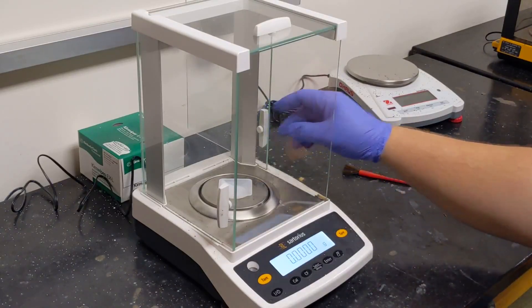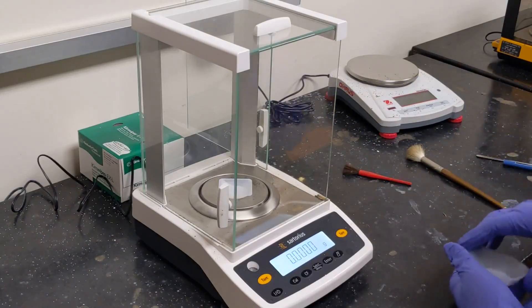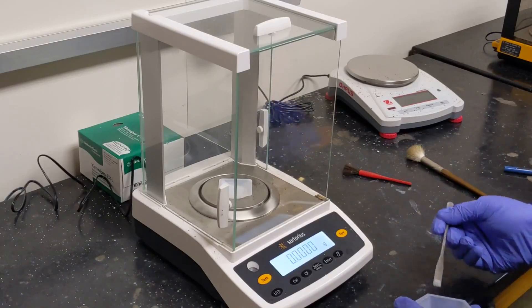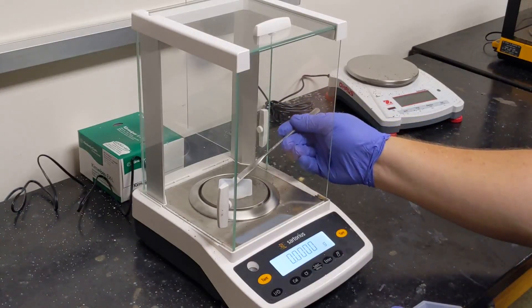Now we can open the door again, and we can begin to add our material to the weighboat. You'll have it in a separate container, and take your spatula and select some out on the spatula, and add it to the weighboat.